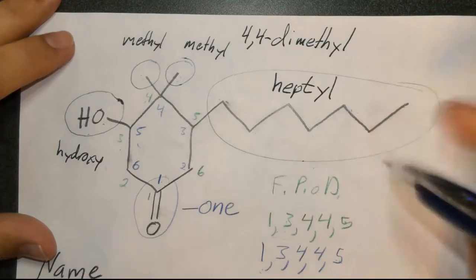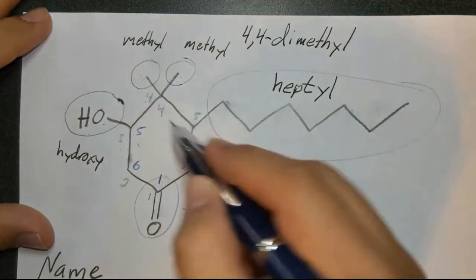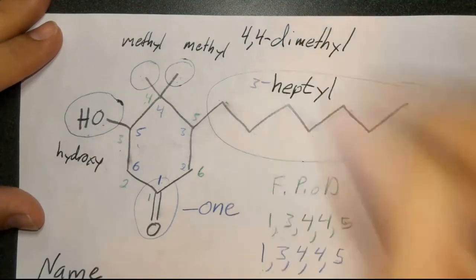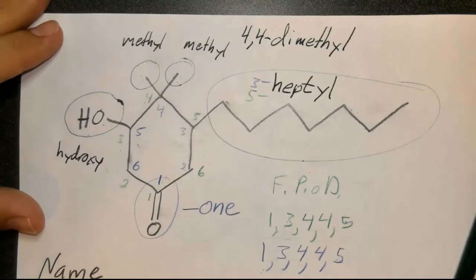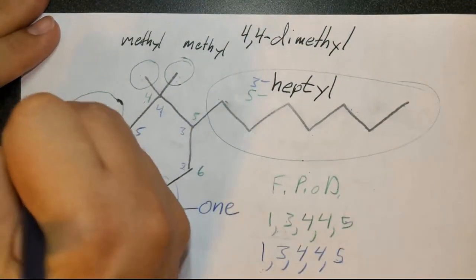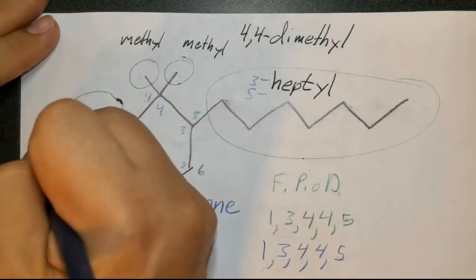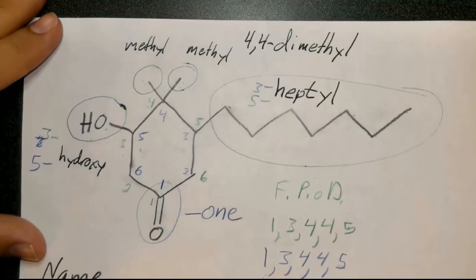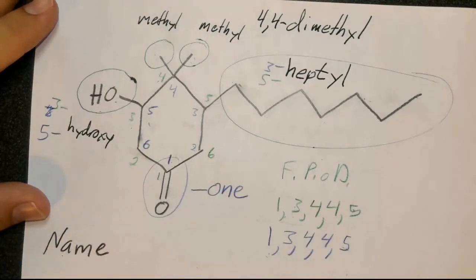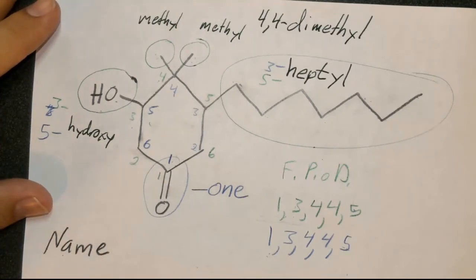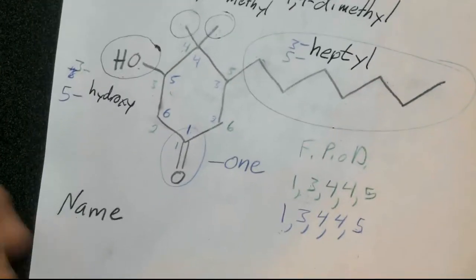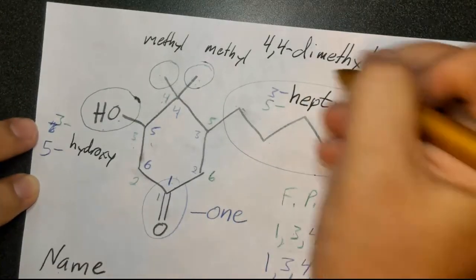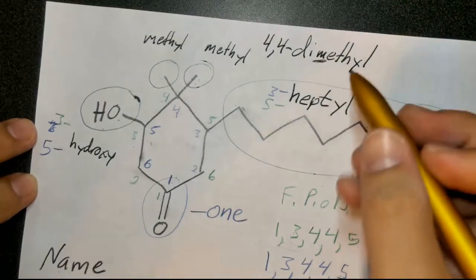We haven't finished the numbering yet. Before numbering, let's look at the coloring scheme because it matters. So either this chain is going to be at position three (three-heptyl) or at position five (five-heptyl), and correspondingly the hydroxy will be at five or three. The way you determine it is based on alphabetical order.